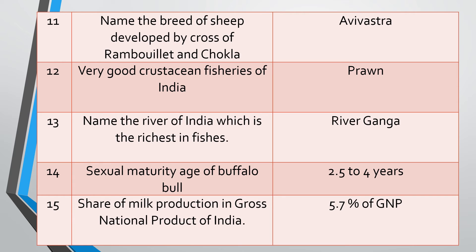Question fourteen: Sexual maturity age of buffalo bull. Answer: 2.5 to 4 years of age. Question fifteen: Share of milk production in the Gross National Product (GNP) of India — how much percentage? Answer: 5.7% of GNP. It is a very good contribution to agriculture.